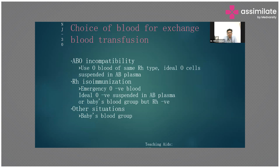Exchange transfusion is indicated mostly for ABO incompatibility, Rh isoimmunization, and G6PD deficiency. Which type of blood do we use for exchange transfusion? We need to use O blood group with the same Rh type. Ideally, O red cells suspended in AB plasma. For example, if the mother is O and father is A or B, we use O red cells with A or B negative plasma.